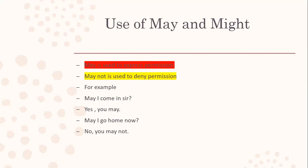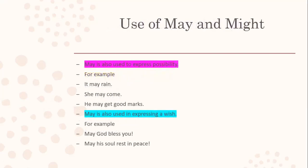May is also used to express possibility. When there's a possibility of something, we use 'may.' For example: it may rain, she may come, he may get good marks. May is also used for expressing a wish — 'May God bless you.' When someone has passed away we say 'May his soul rest in peace,' so again 'may' expresses a wish.